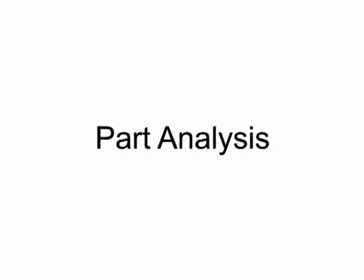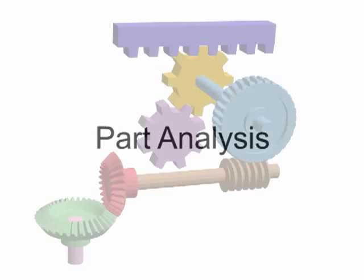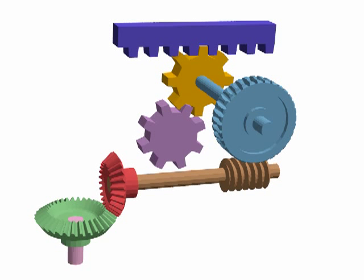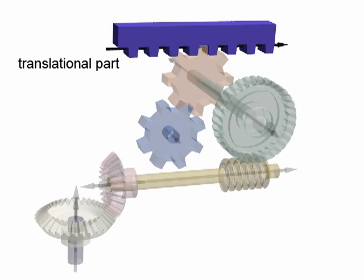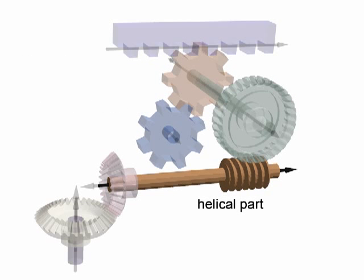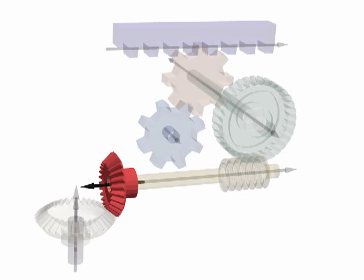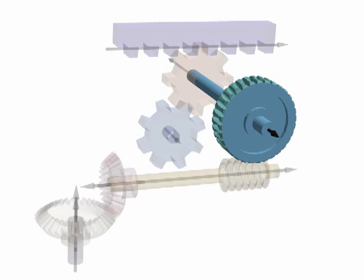First, we analyze each individual part. We identify parts with symmetries, namely rotational, translational and helical. Based on the symmetry information, we further identify parts with conical and cylindrical profiles by fitting a quadric surface on the side segments of them.